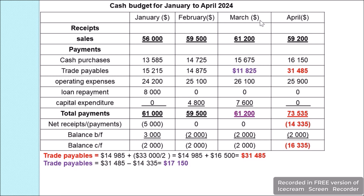After adjustments for March: cash sales are $61,200. Cash purchases are $15,675, adjusted trade payables are $11,825, operating expenses are $26,100, and capital expenditure is $7,600. Total payments equal $61,200. Receipts and payments balance, giving net zero. The opening overdraft of $2,000 is carried forward as $2,000 — in accordance with company policy.